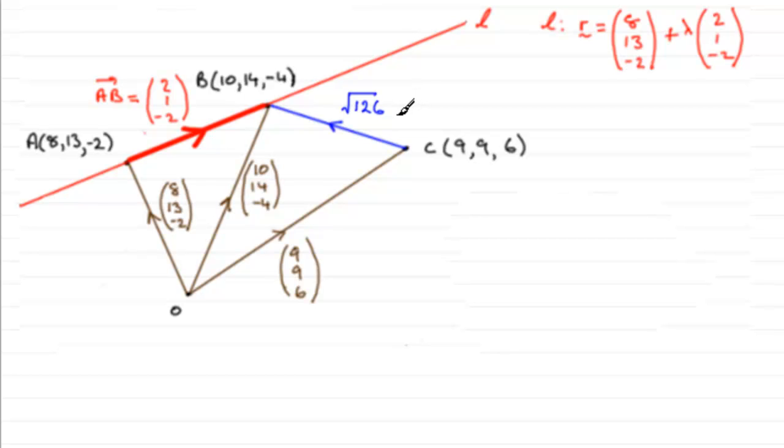So this acute angle that we've got to find between the line segment CB and the line L, for my drawing it seems to be that angle there, which I'll call theta.